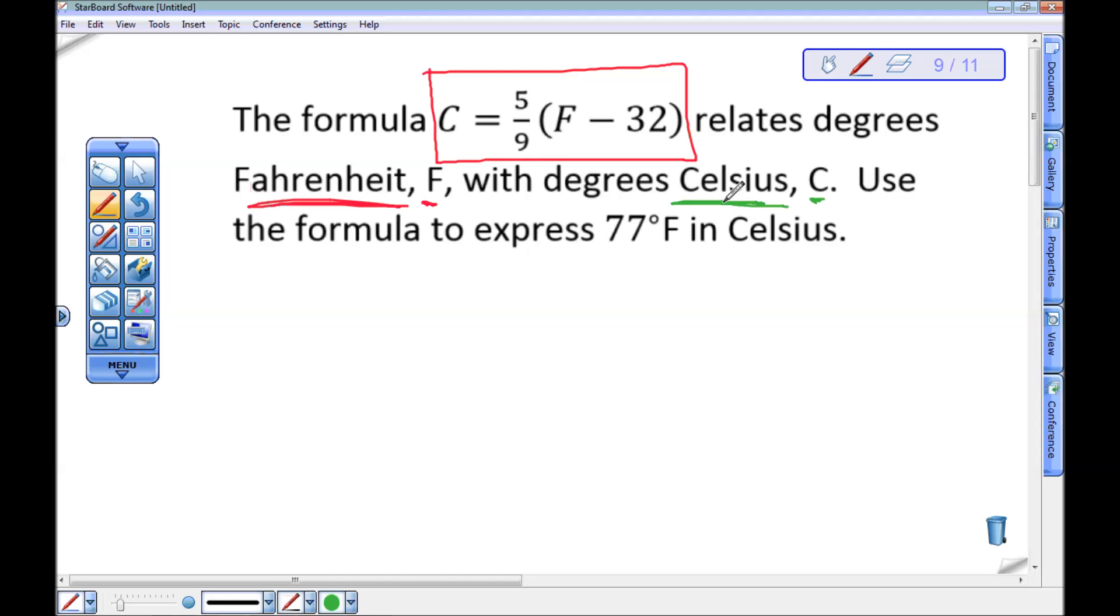I want to use this formula to express 77 degrees Fahrenheit. This is 77 degrees Fahrenheit, so that's what I'm going to use for F. I want to change it to degrees Celsius, so I shouldn't put anything in for Celsius, which is good because I'm going to put this in for F.